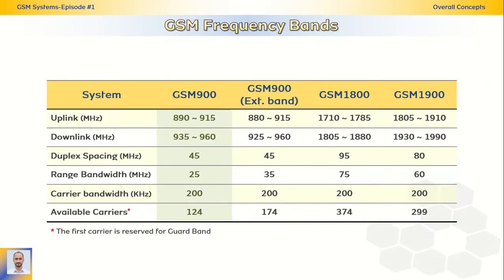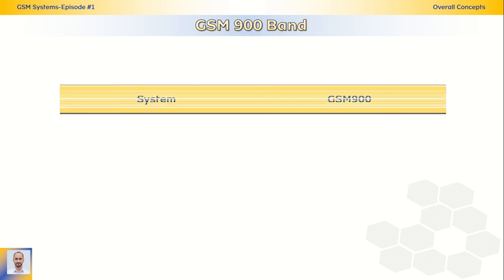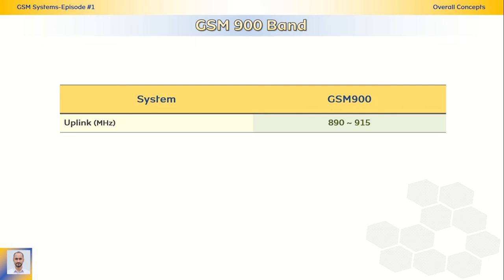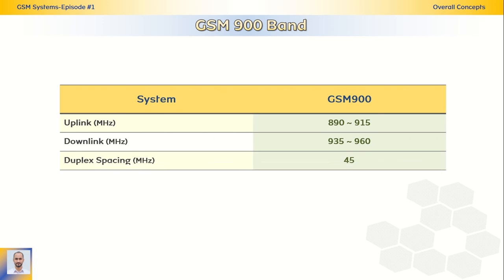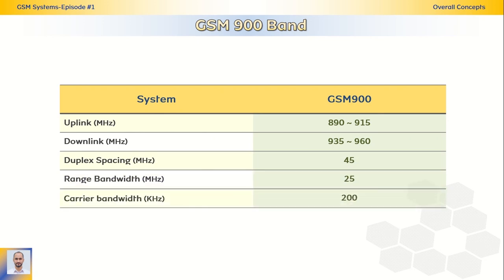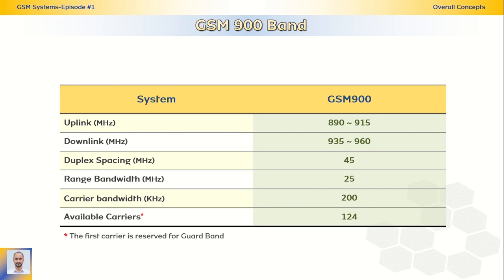The GSM frequency bands. We have GSM 900, GSM 900 extension band, GSM 1800, and GSM 1900. The main difference is the bandwidth range for each band, which determines the number of carriers that can be deployed, depending on wavelengths for either short or long distance. As an example, for GSM 900 bands, the uplink range is 890 to 915 MHz, the downlink is 935 to 960 MHz, so the duplex spacing is 45 MHz and the bandwidth range is 25 megahertz. This allows 125 available carriers with a bandwidth of 200 kilohertz each, and the first carrier is reserved for the guard band.